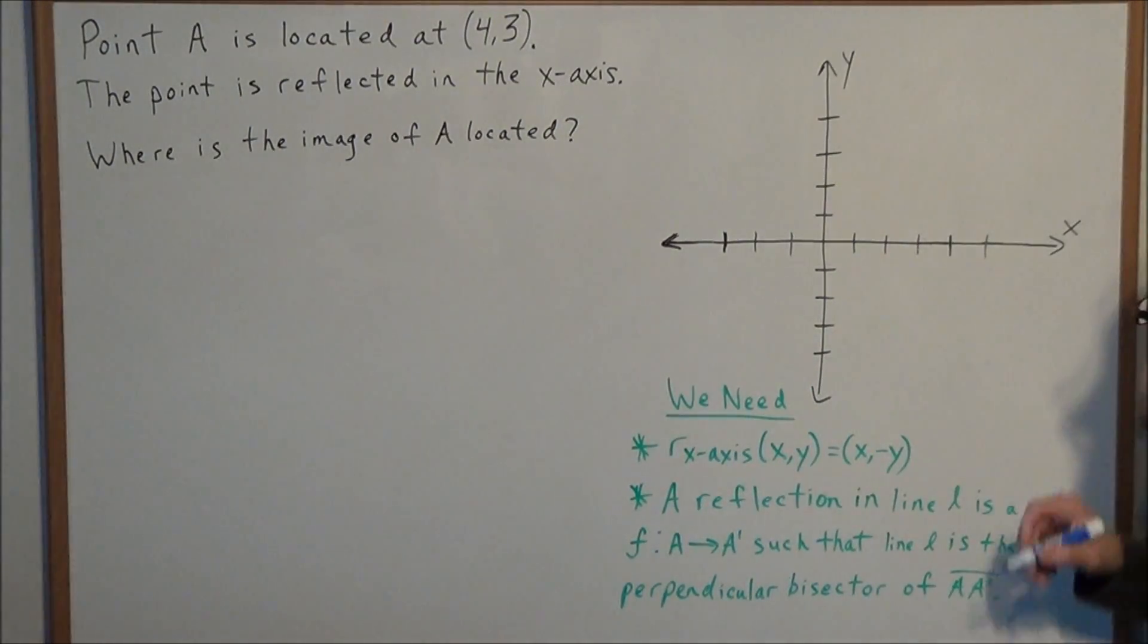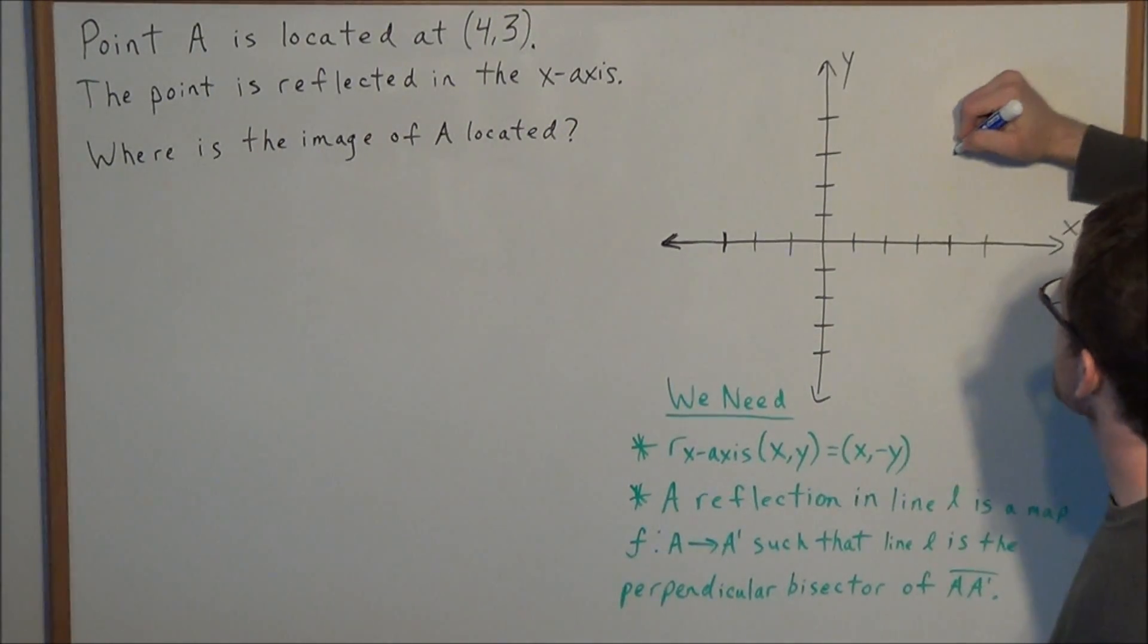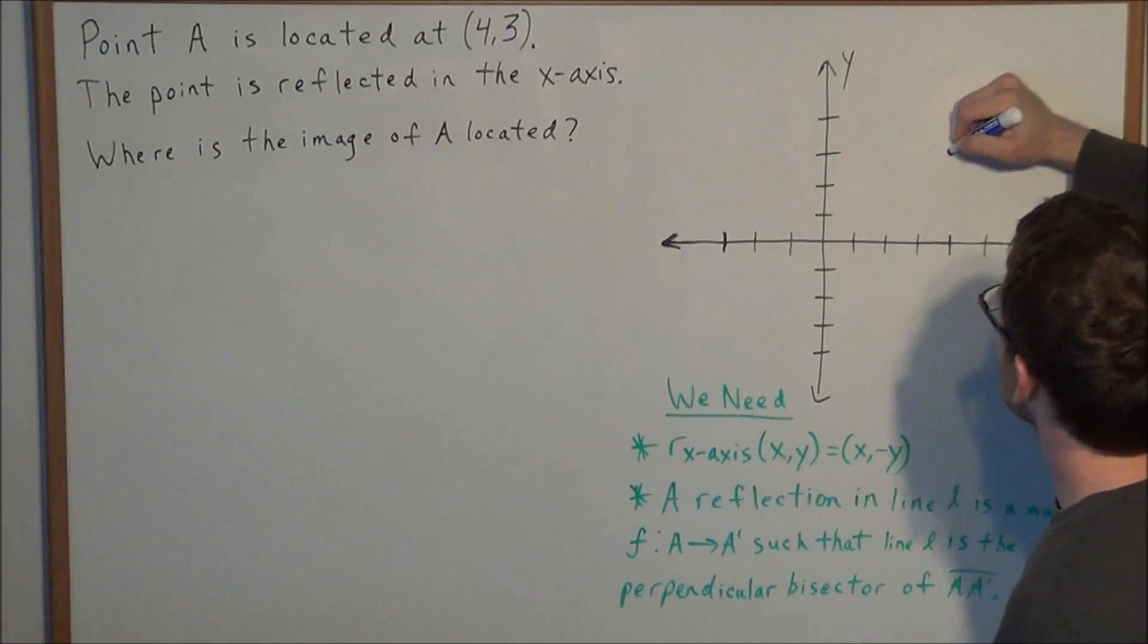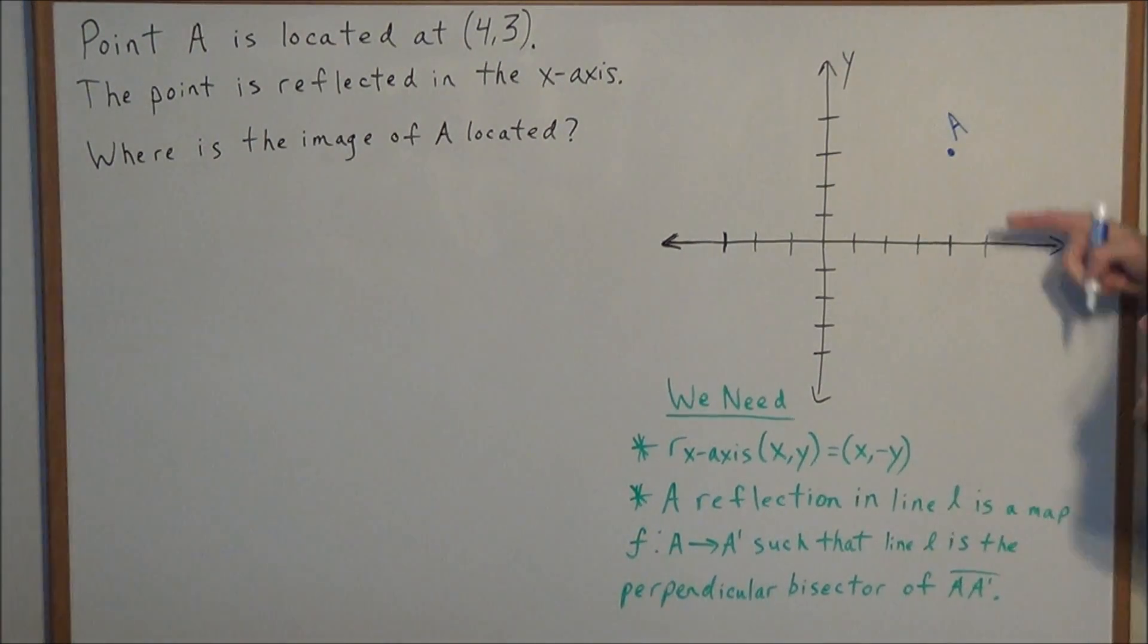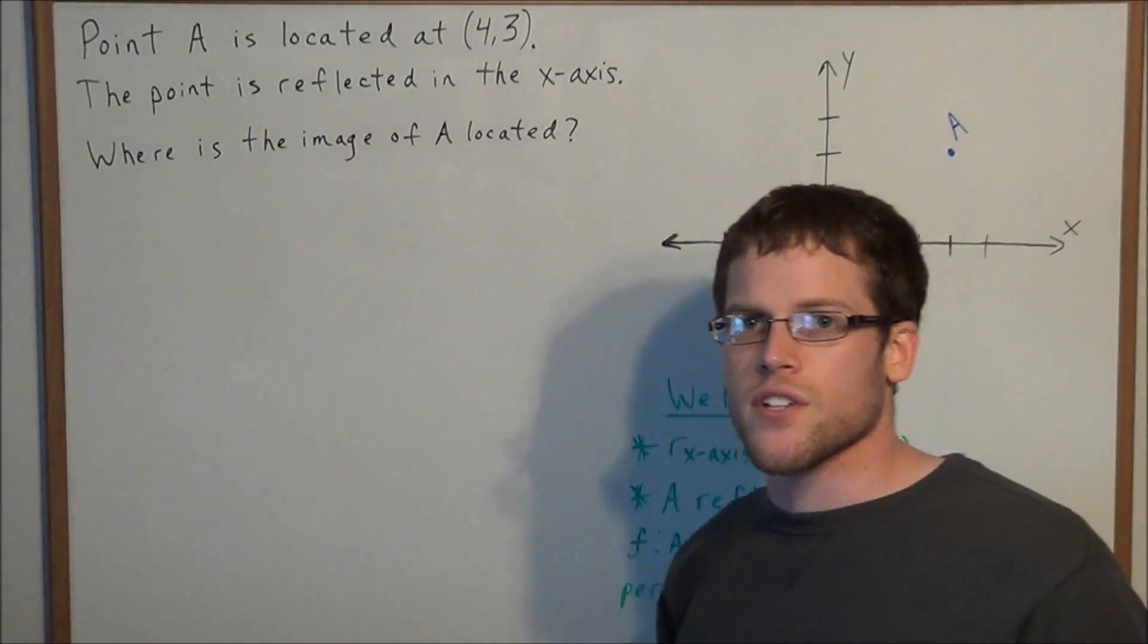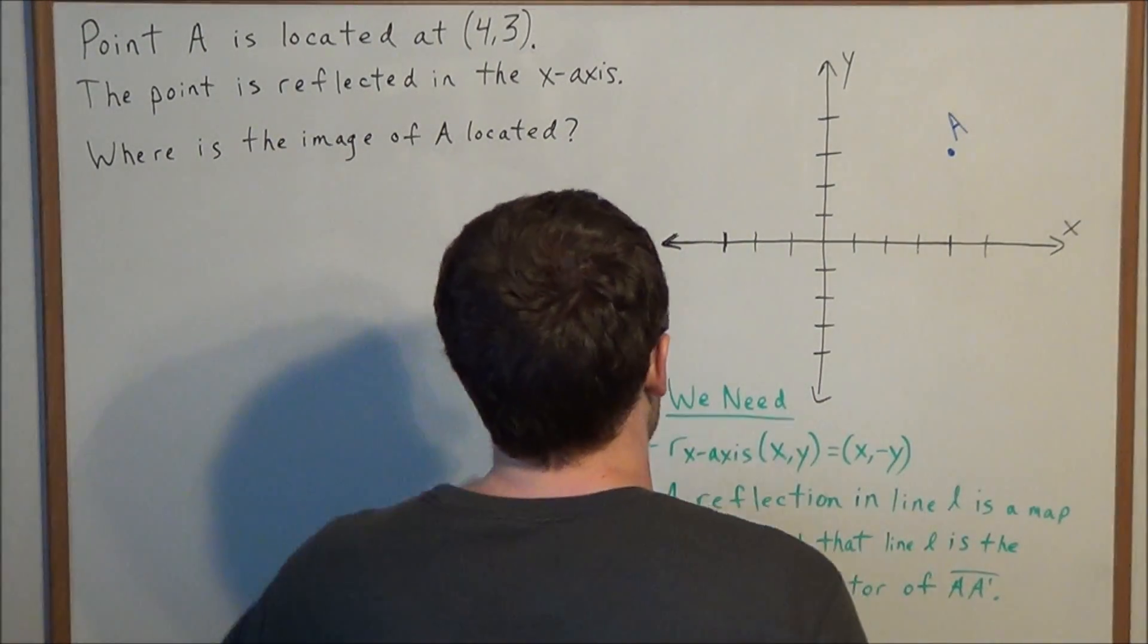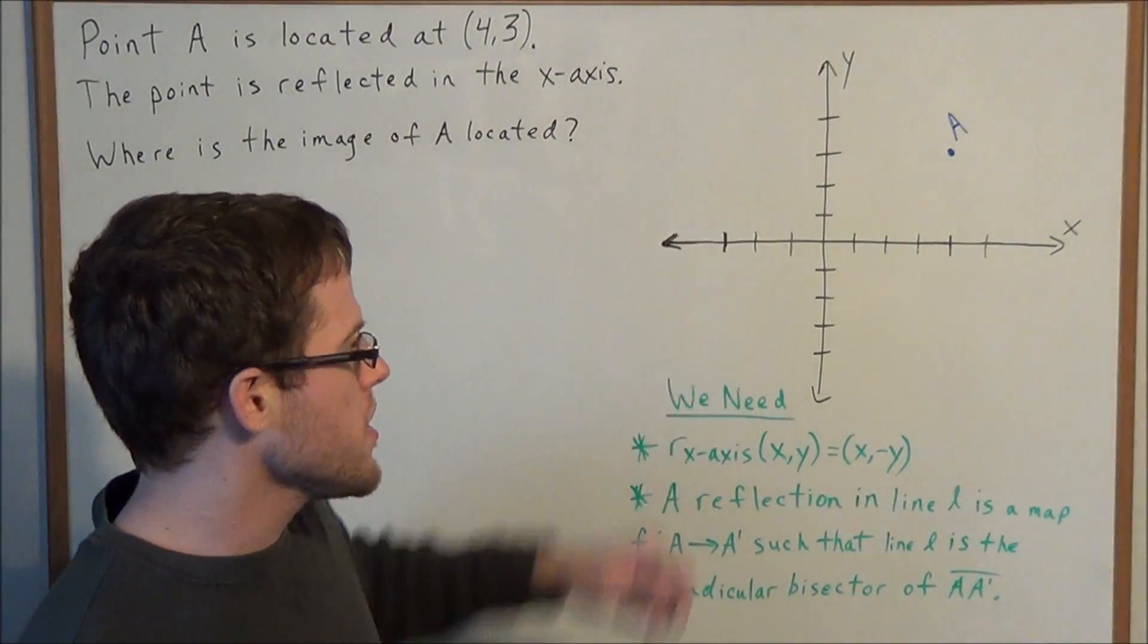So we can start by plotting the point (4,3) and we can label this point A. Now the goal is to find the image of A after a reflection in the x-axis. There are a few ways we could find the image of A.